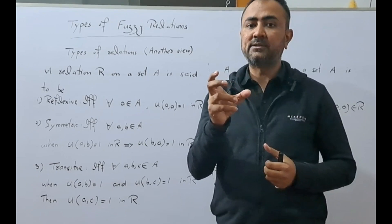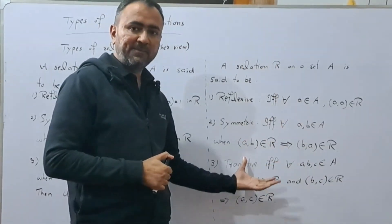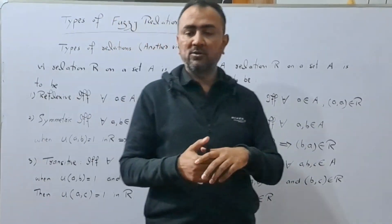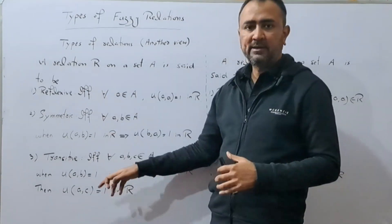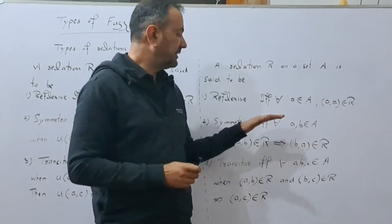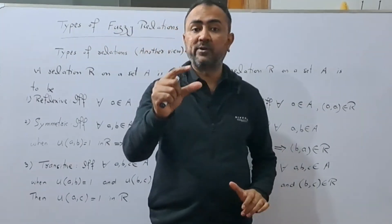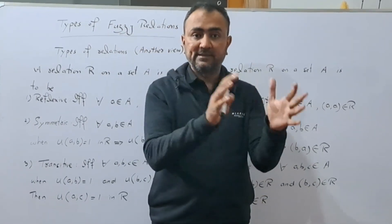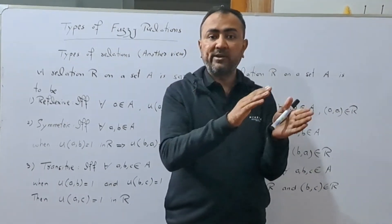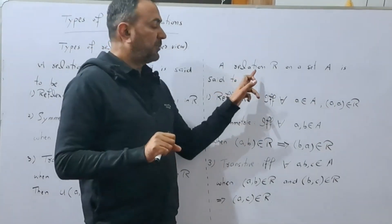We recall types of relations and write the definitions: reflexive, symmetric, and transitive. We will first transform the definitions of reflexivity, symmetry, and transitivity in terms of membership functions. Once we understand this, we will go to the definitions of reflexive fuzzy relation, symmetric fuzzy relation, and transitive fuzzy relations.